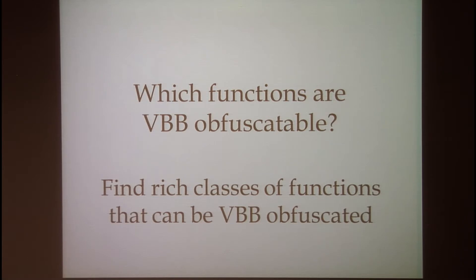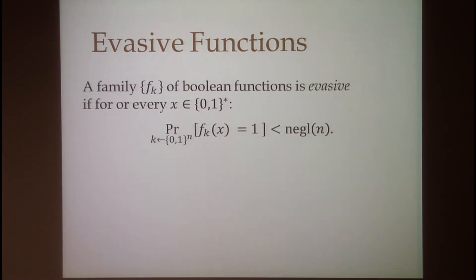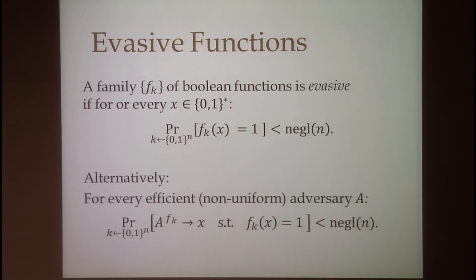We address this question by looking at a specific class of functions that we call evasive functions. We say that a family of Boolean functions is evasive if for every input x, the probability that a random function in the family maps x to 1 is negligible. Equivalently, any efficient adversary that gets black box access to a random function in the family cannot find a preimage of 1 with more than negligible probability.